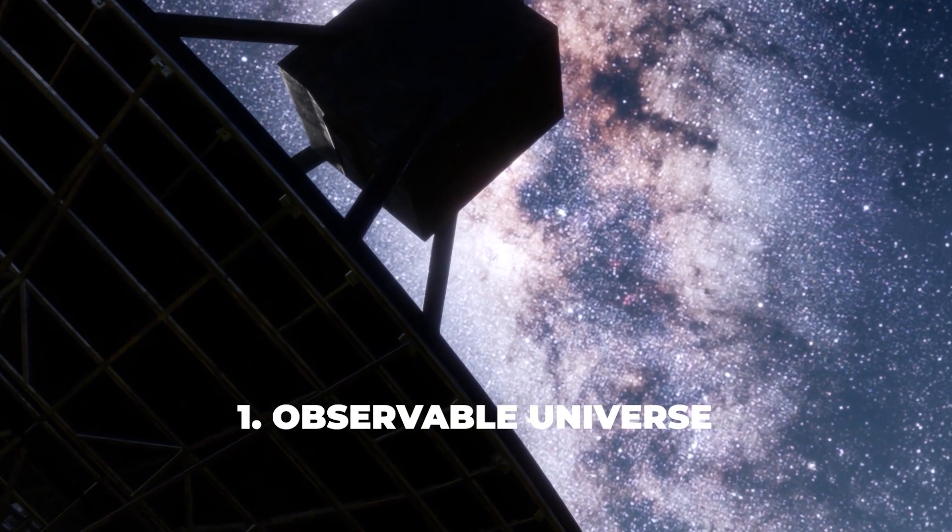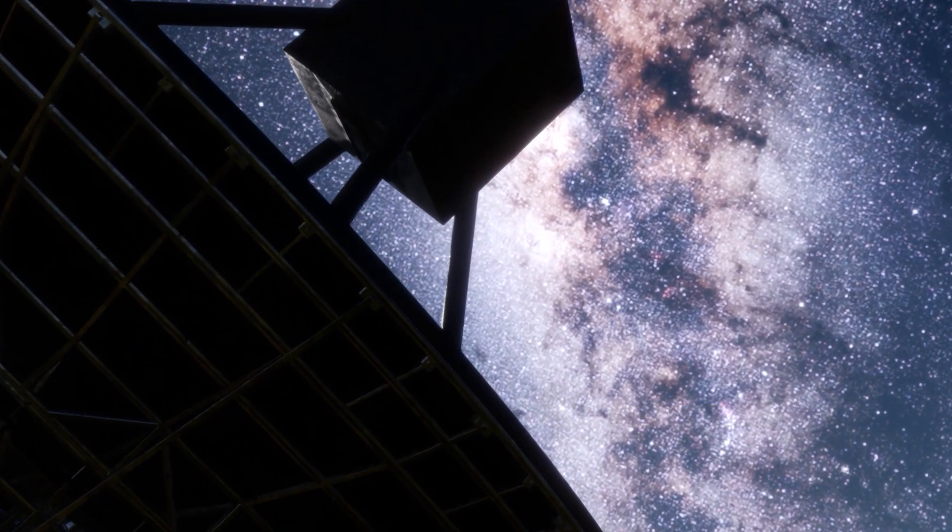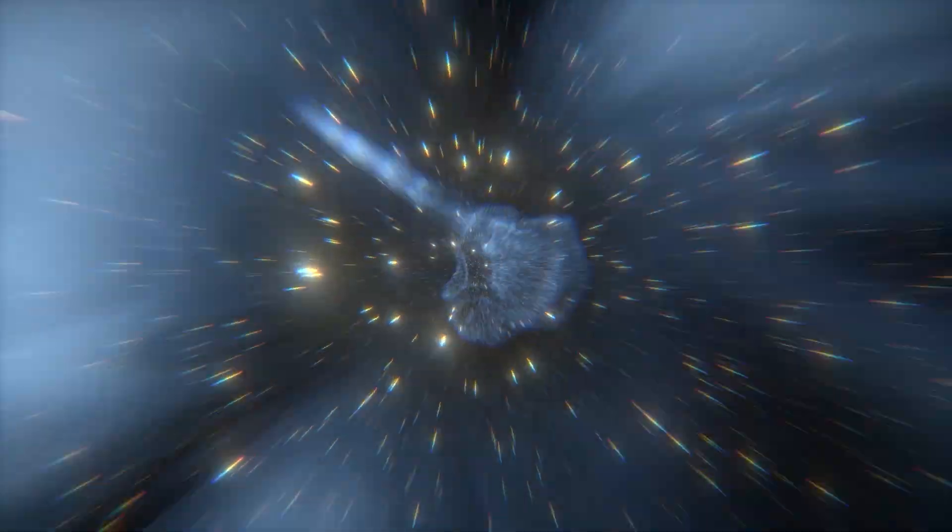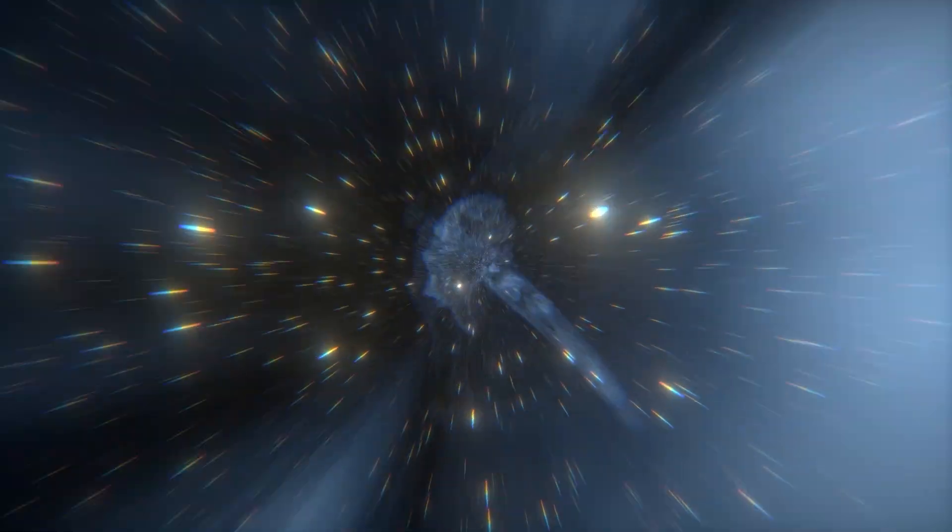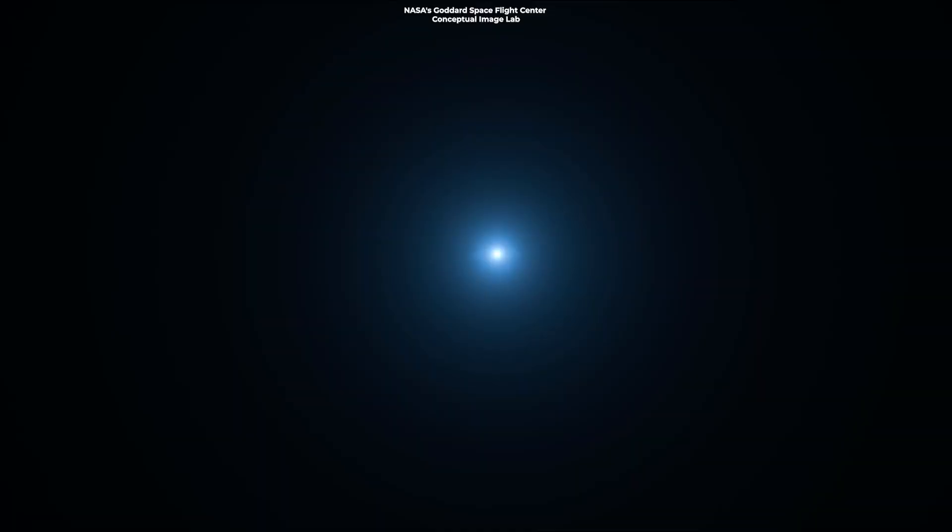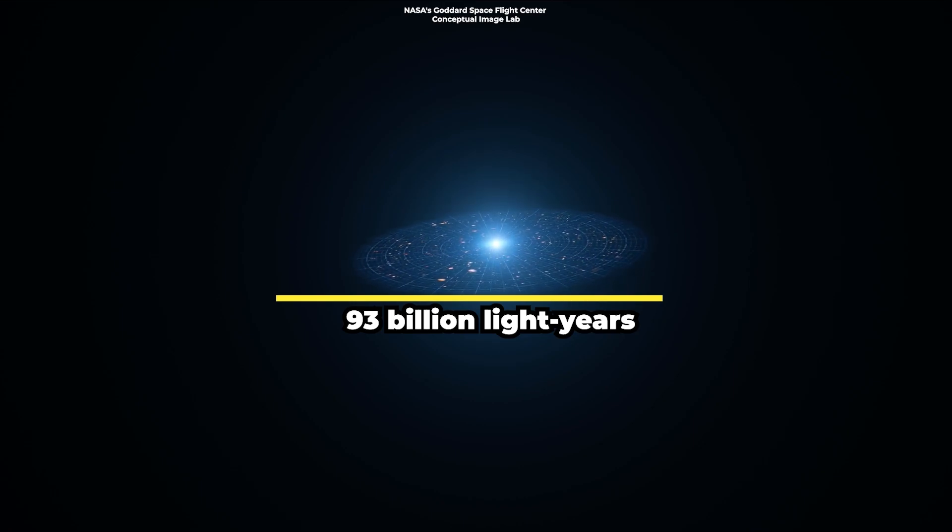And now, for the number one biggest thing in our list, the observable universe itself. The observable universe refers to the part of the universe that we can observe and gather information about due to the finite speed of light and the age of the universe. The observable universe has a diameter of approximately 93 billion light-years.